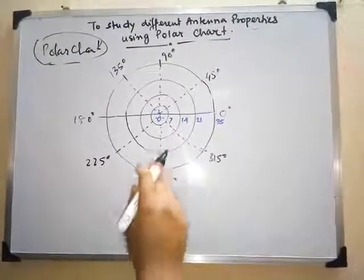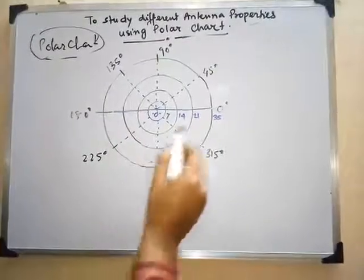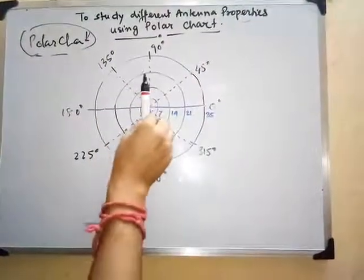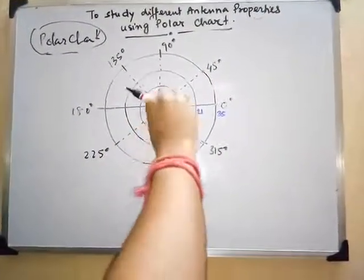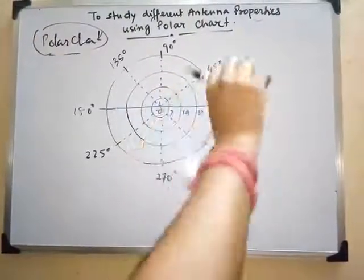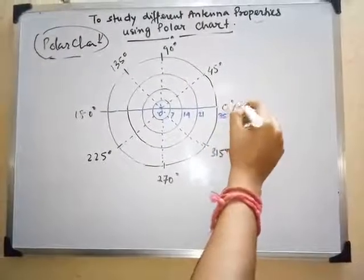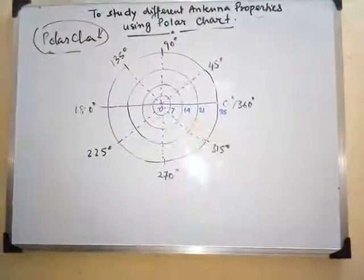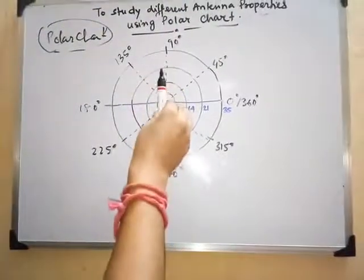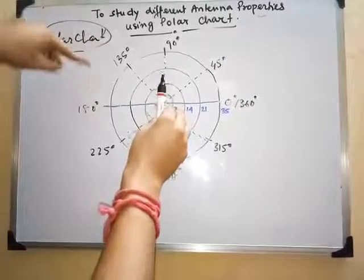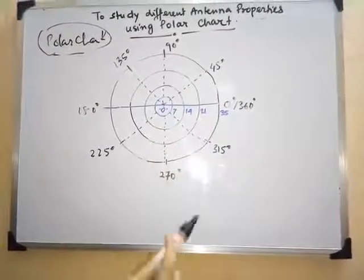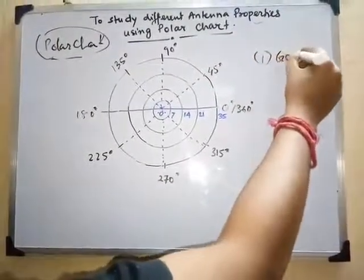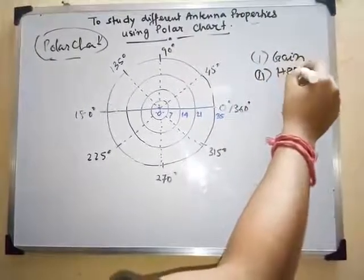This is the angular orientation of the polar chart. If you place the antenna at the center of the polar chart and rotate it, you can rotate from zero degrees to 360 degrees. You can measure how much radiation occurs in each direction and at each angle using this polar chart. We will measure gain and HPBW as the primary quantities.